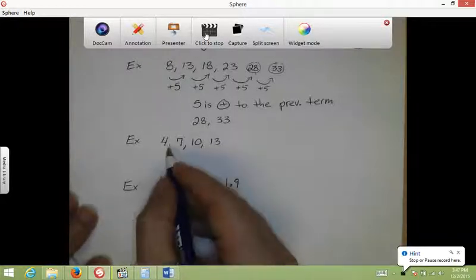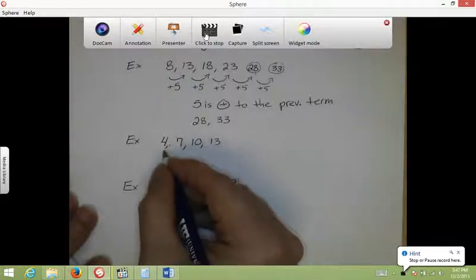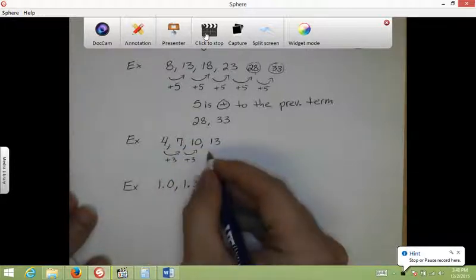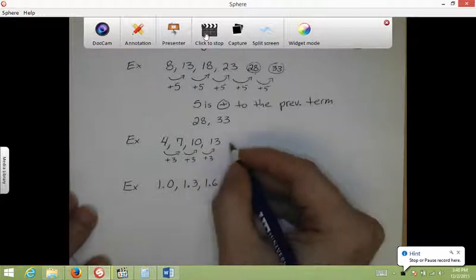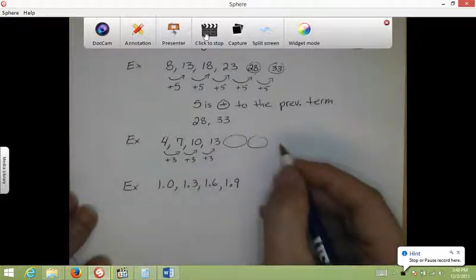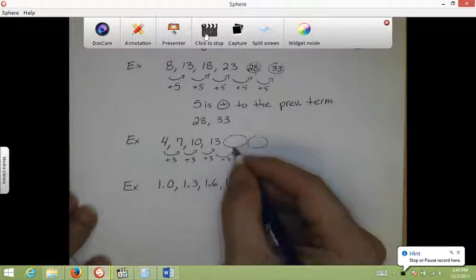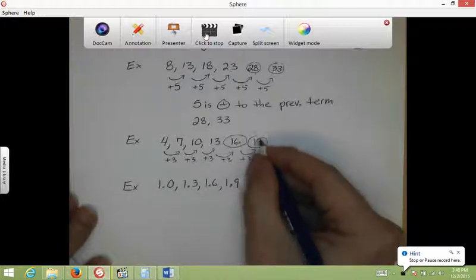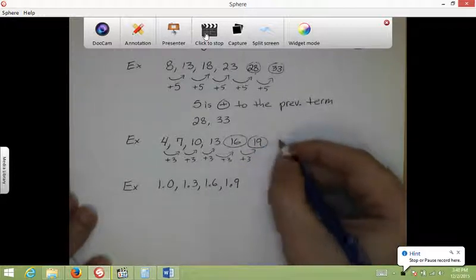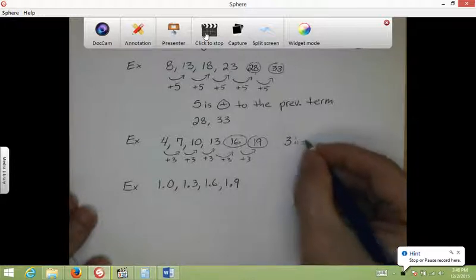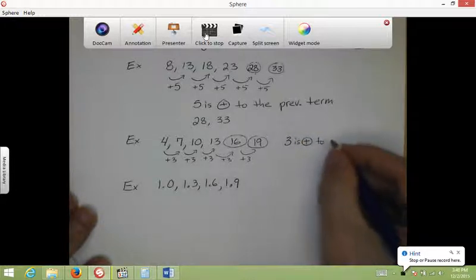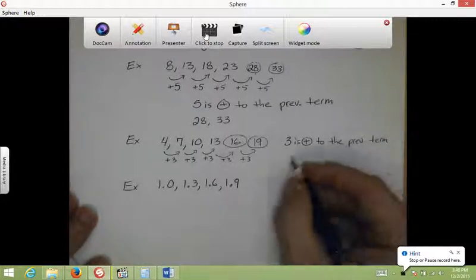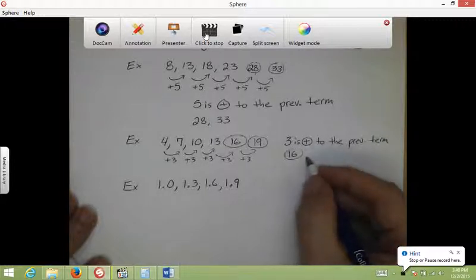All right. So hopefully you got it by now. So from 4 to 7, we're adding 3. From 7 to 10, we're adding 3. From 10 to 13, we're adding 3. So for the next two terms, 16 plus 3 is 19. So for the description, you would say 3 is added to the previous term. And the next two numbers we found were 16 and 19.